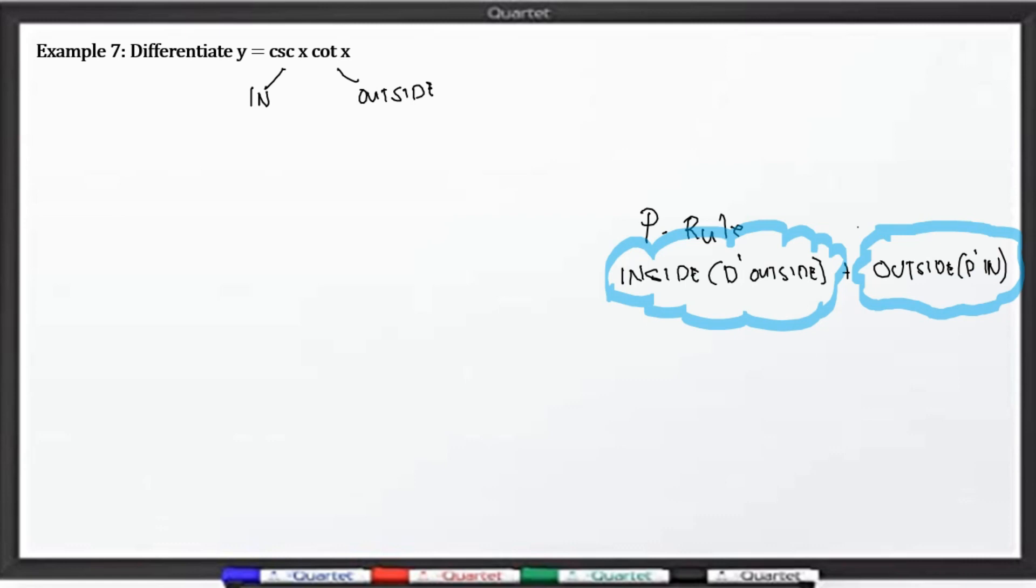Ngayon, ganito po ang ating gagawin. y prime is equal to yung cosecant x, yan po yung inside. So we are going to copy that. Cosecant x, eto po yun, inside, times the derivative of the outside. The derivative of cotangent x is negative cosecant squared x. So direct substitution, negative cosecant squared x lang po. Yan po yung derivative nung outside.